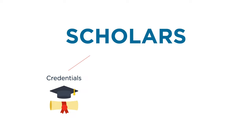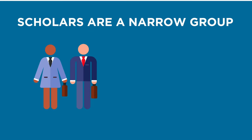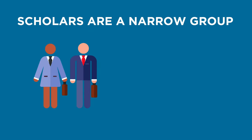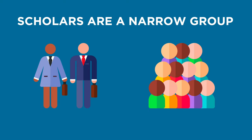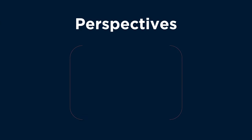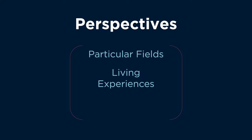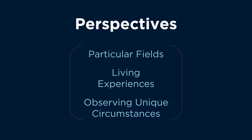For example, scholarly articles are written by scholars that have particular credentials and are associated with institutions, such as Utah State. Scholars are an incredibly narrow group. Think of all the expertise and information others have that might be useful but may not meet the scholarly criteria. These individuals can be people who are working in particular fields, living those experiences, or observing them in unique circumstances, which are all valuable perspectives.